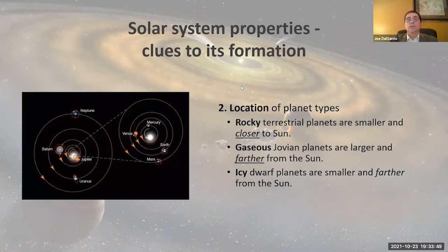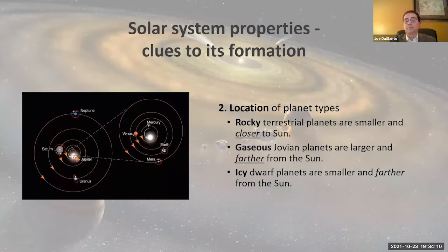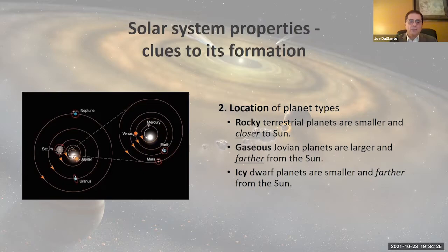Number two: the location of objects in the solar system. The terrestrial planets are rocky in nature and closer to the sun, while the Jovian planets are gaseous in nature and farther from the sun. In recent years we've discovered icy dwarf planets that are smaller but also farther from the sun. These may seem like small things, but they are significant — we can take them as the first building blocks and build our understanding as we move forward.